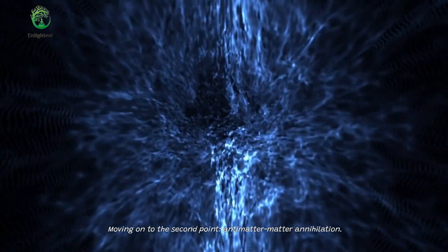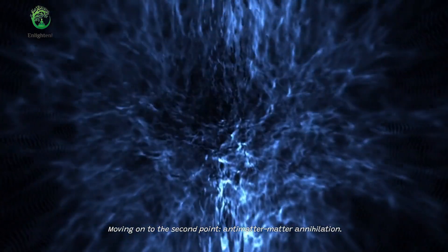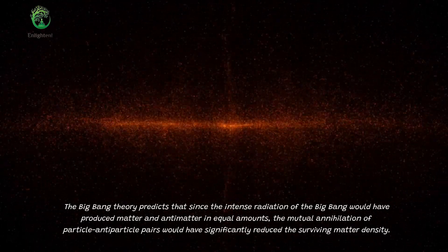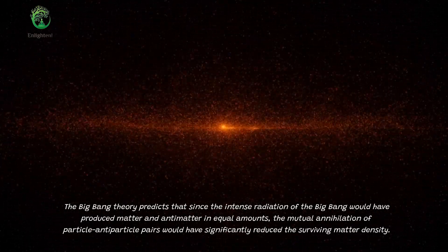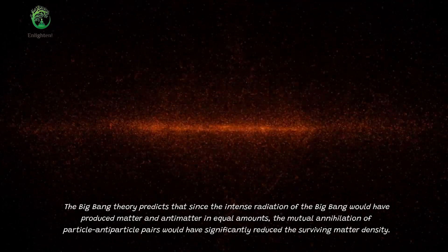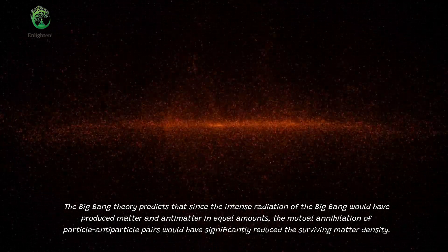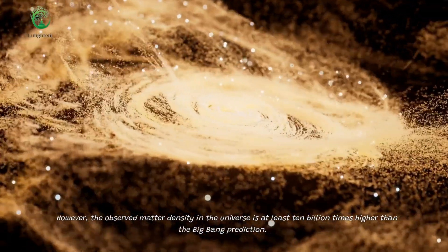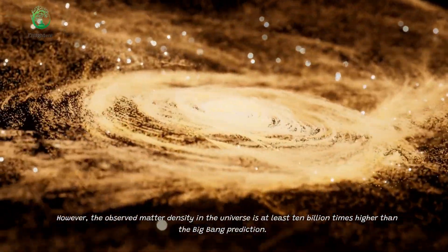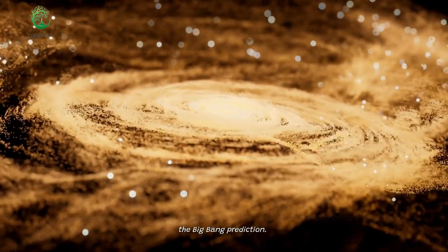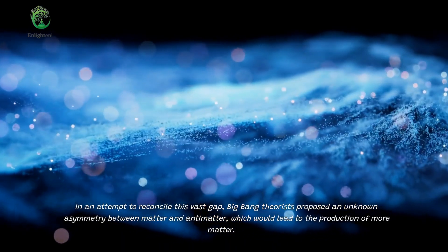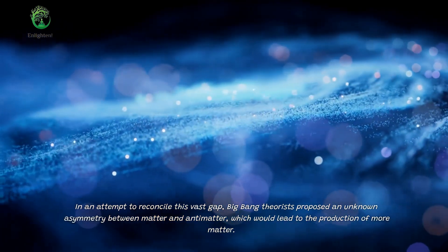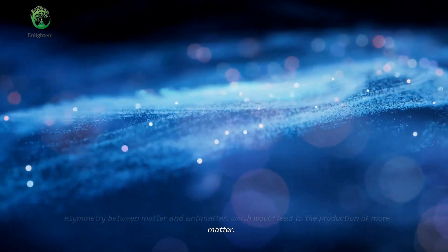Moving on to the second point, antimatter-matter annihilation. The Big Bang Theory predicts that since the intense radiation of the Big Bang would have produced matter and antimatter in equal amounts, the mutual annihilation of particle-antiparticle pairs would have significantly reduced the surviving matter density. However, the observed matter density in the universe is at least 10 billion times higher than the Big Bang prediction. In an attempt to reconcile this vast gap, Big Bang theorists proposed an unknown asymmetry between matter and antimatter, which would lead to the production of more matter.